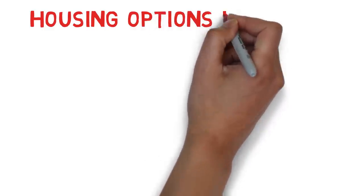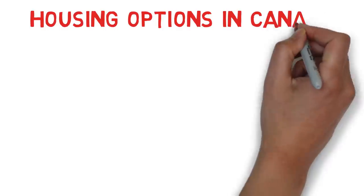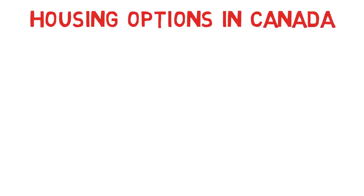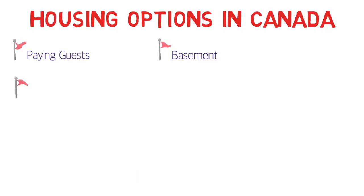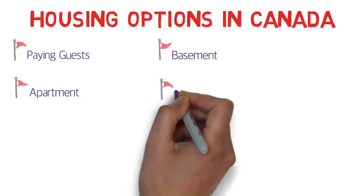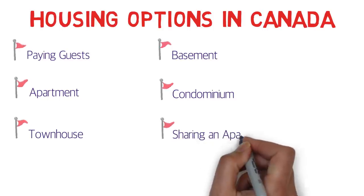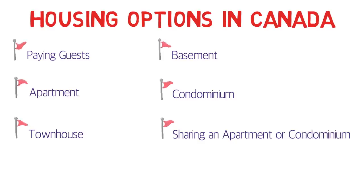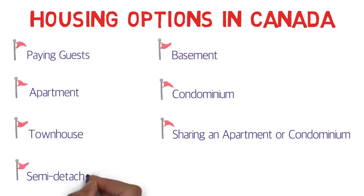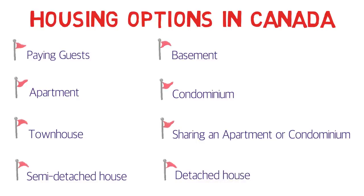Let me start by listing out all the housing options, after which I'll talk about each one in detail. I'm talking in terms of renting, not buying. So first you have the option of paying guest, then renting a basement, then renting an apartment or a condominium — we'll talk about the difference between those two. You also have the option of renting a townhouse, sharing an apartment or condominium, renting a semi-detached house, or renting a detached house.